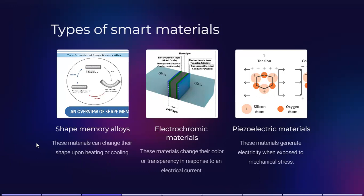Electrochromic materials can change their color or transparency in response to an electrical current. We have seen electrochromic voltage glass — the layers include the electrochromic layer (green), a transparent electrical conductor, cathode and anode layers, and tungsten dioxide.